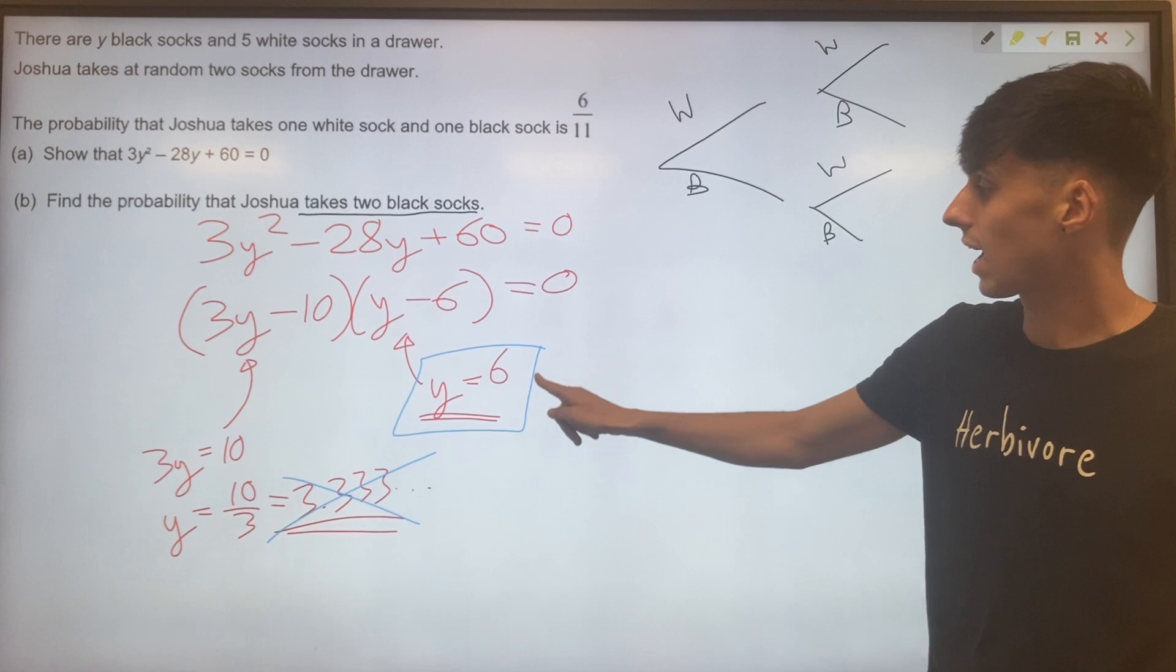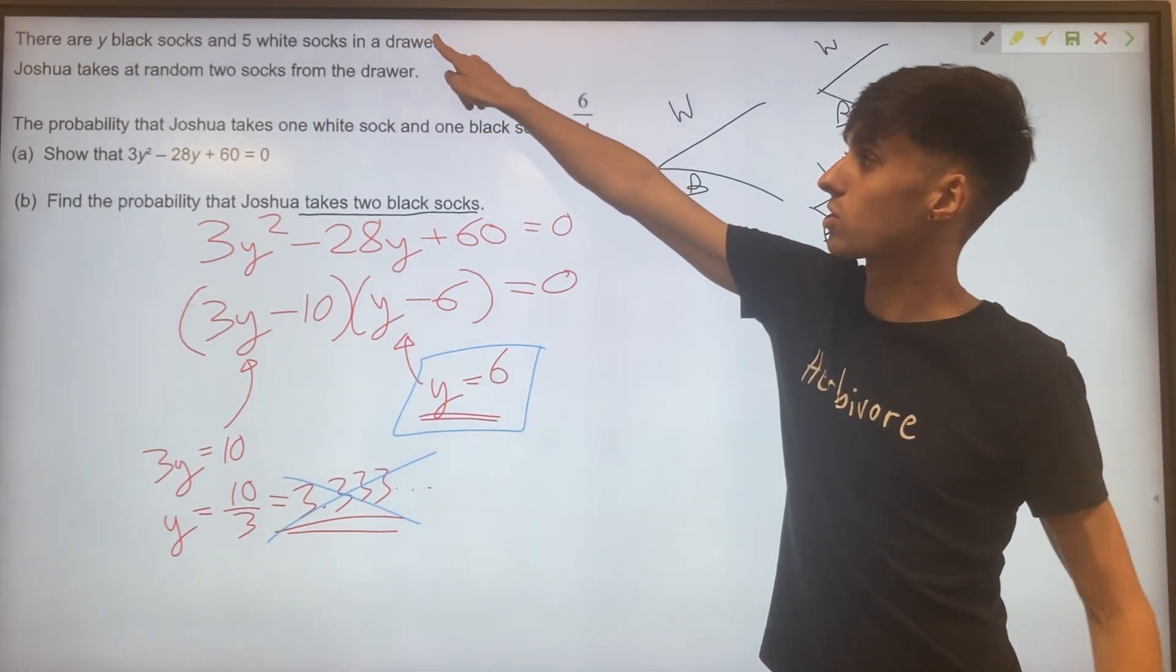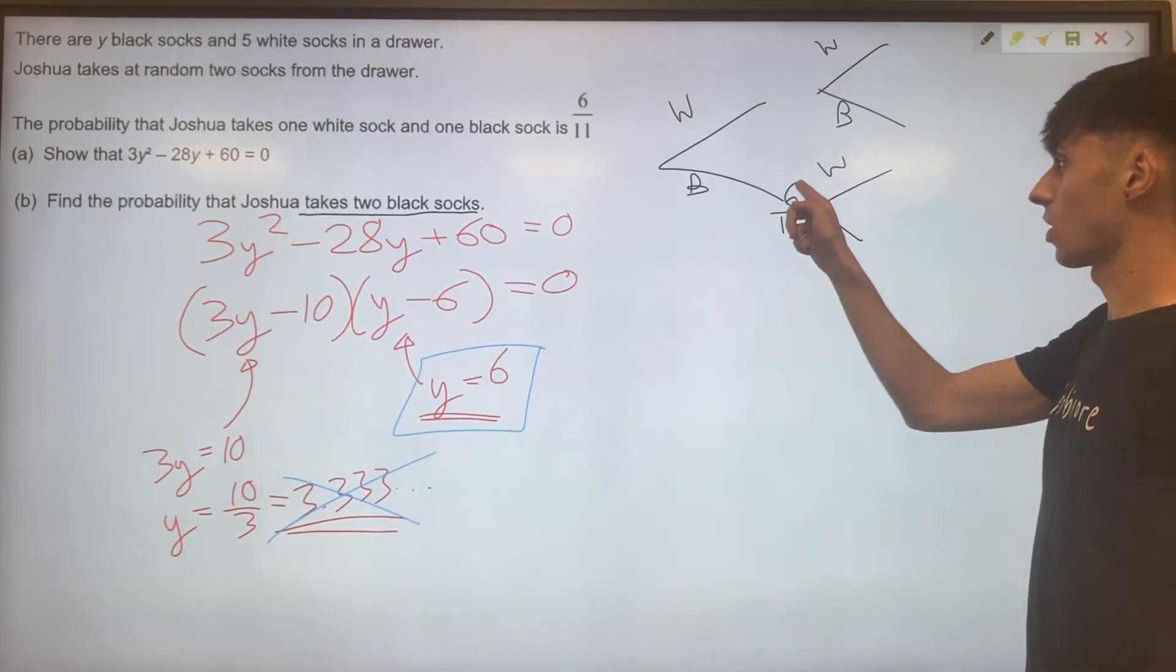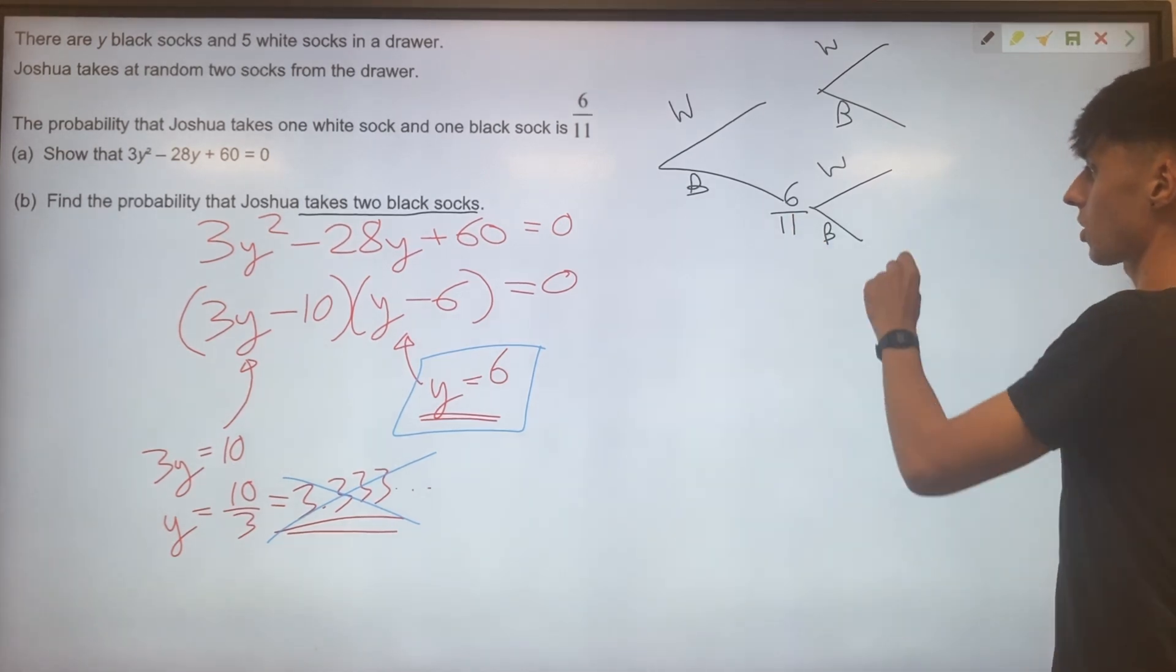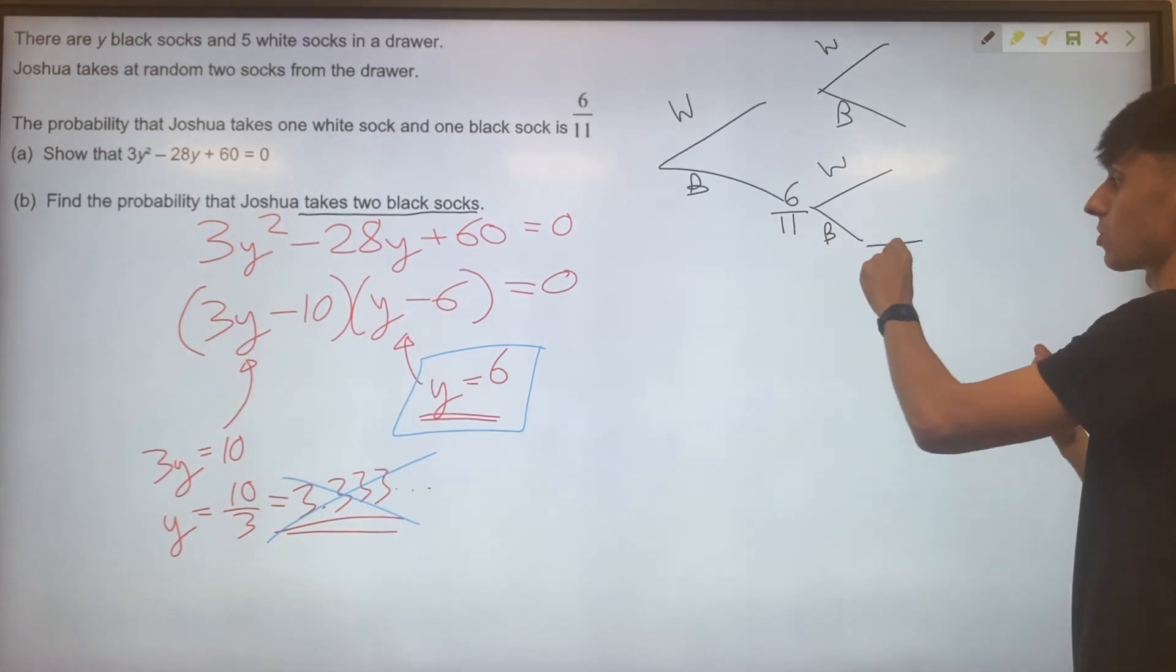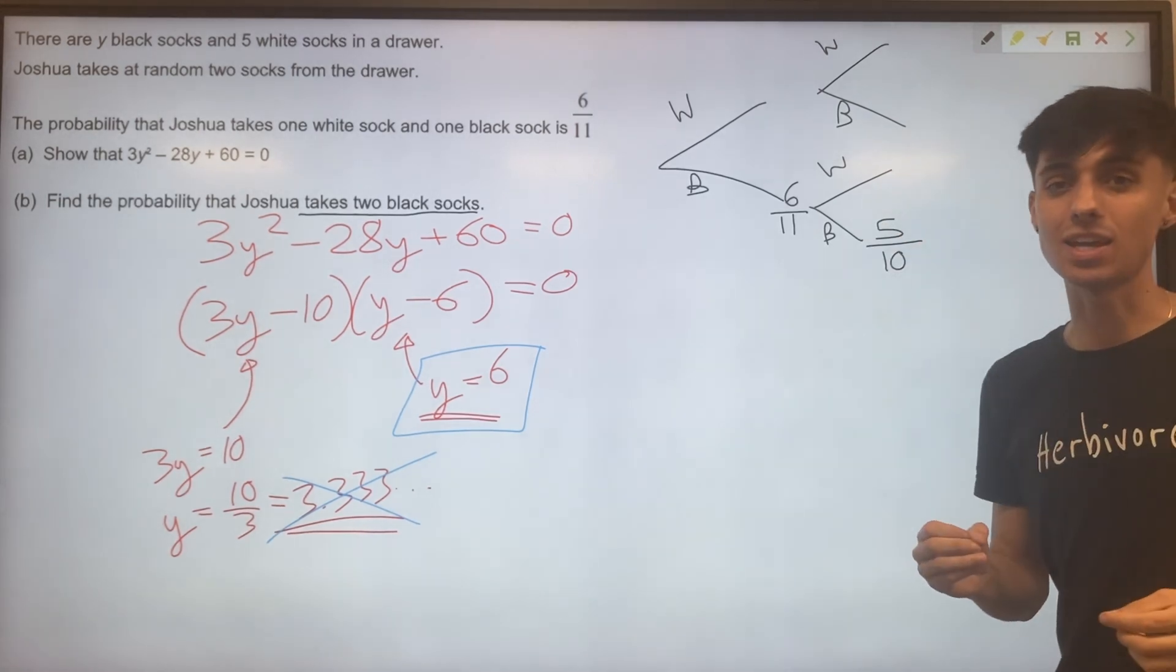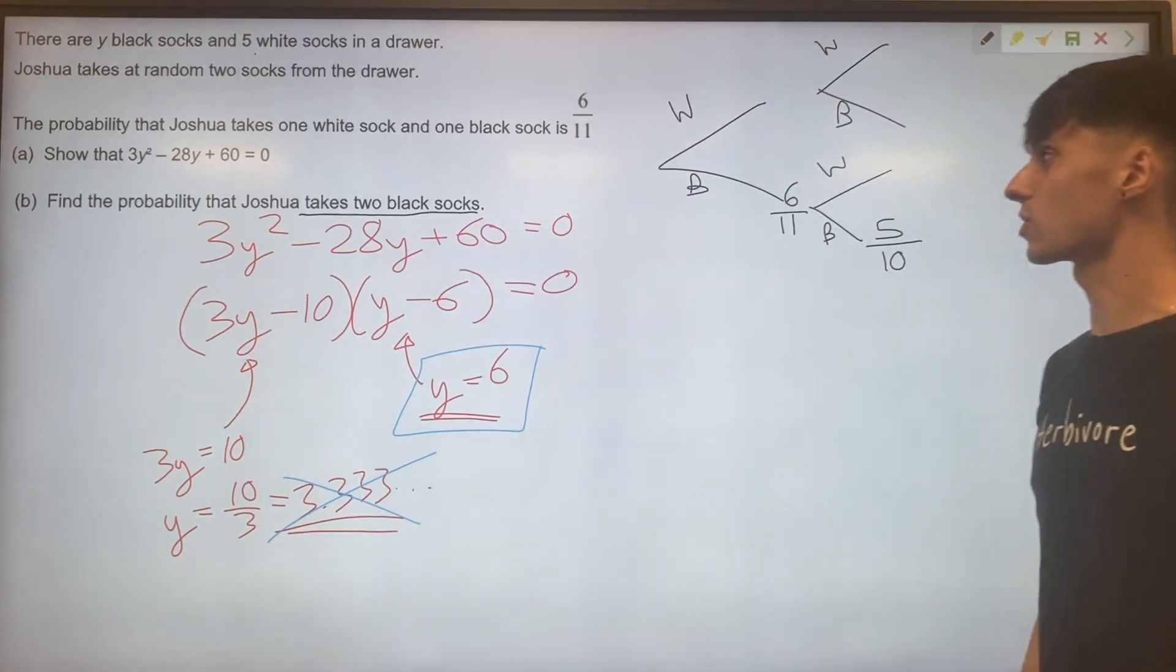So if we knew that y was 6, that means 6 black socks and 5 white socks to start out with. 6 out of 11 is our initial probability. On the second pick though, we just need to be careful. Obviously he already took a sock out, so that 11 goes down to a 10. And because the sock was black, it's a 5 out of 10 here. There are still 5 white socks because we didn't touch a white sock on the first go.